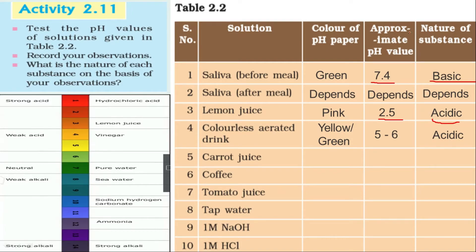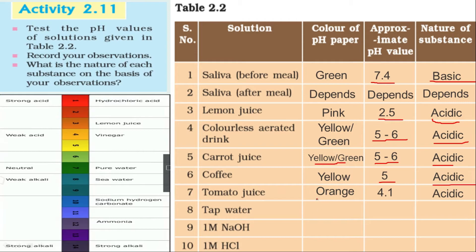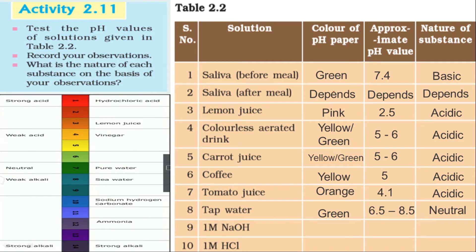Carrot juice also shows yellow or green color on the pH paper, with an approximate pH of 5 to 6, so its nature is acidic. Coffee and tomato juice: the pH paper shows orange, approximate pH value is 4.1, so their nature is acidic. Tap water: the pH paper shows green, approximate pH lies between 6.5 to 8.5 — in most cases it is 7 — so we can consider it neutral.